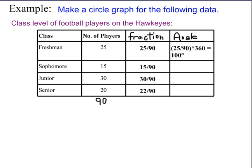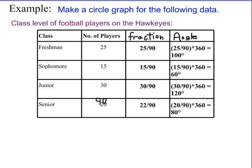For the sophomore class I'm going to take 15 over 90 times 360 degrees. I've gone ahead and filled out all the angles: 100 degrees, 60 degrees, 120 degrees, and 80 degrees. It's a good check to add up those angles and make sure they add up to 360 degrees, because there are 360 degrees in a circle.